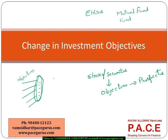This is the objective. This is the risk-related objective. This is the return-related objective. These are the constraints. This is the time frame. There are various things that are mentioned as part of the prospectus.